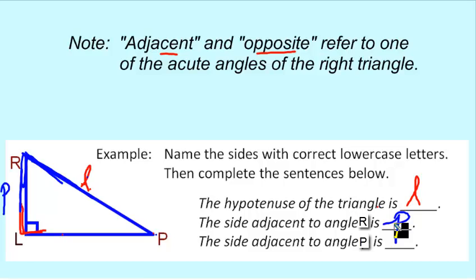And then the side adjacent to angle P. This will be a lowercase r because it's across from angle R. So these are the two sides that make up angle P. The side that is adjacent to angle P is side lowercase r.